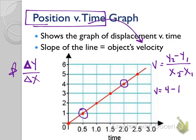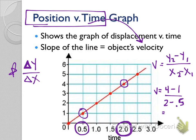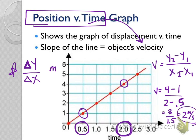To calculate my slope, I'm going to say four minus one over two minus 0.5. Do we see where those numbers came from? Two minus 0.5 are our x-coordinates. Our final point has an x-coordinate of 2, and our initial point has an x-coordinate of 0.5. That gives me 3 over 1.5, so my final slope is two. If this is measured in meters and time is in seconds, our units for velocity are meters per second — which is what we need.